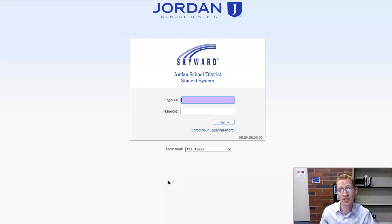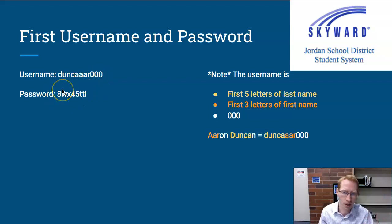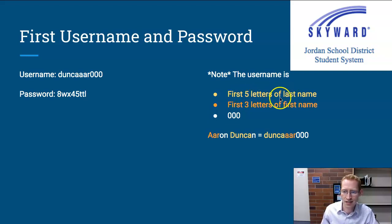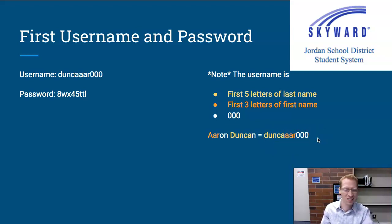Welcome to the very first time using Skyward. By this time, you should have received an email with a parent and student username and password, and it should look something like this. Mine is DunkaR000 with a random alphanumeric password. Your username is made up of the first five letters of your last name, first three letters of your first name, and then 000. I'm Aaron Duncan, so my username is DunkaR000 — or 001, or whatever, if it's a common name.